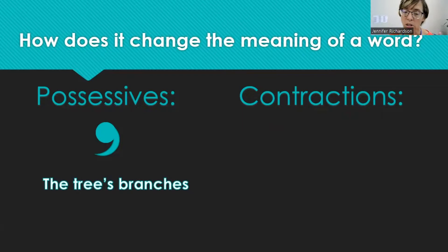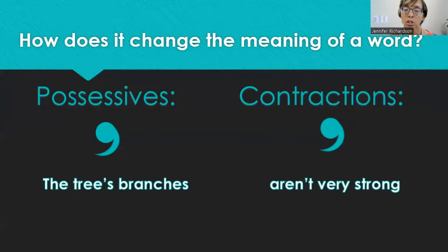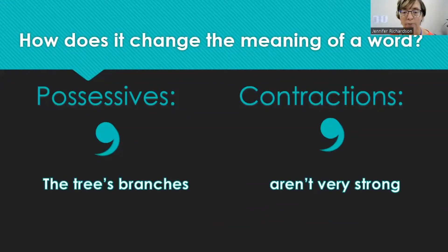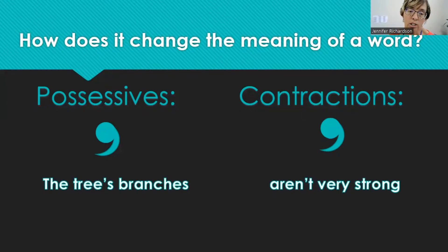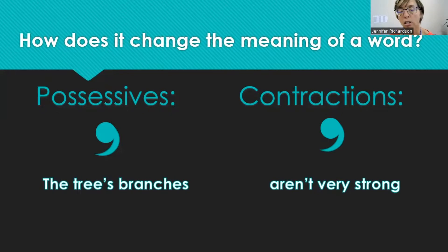We can also use the same little apostrophe for a contraction. Here's a contraction: aren't very strong. Aren't is a combination of the words are and not — it's kind of a shortcut. Aren't is a contraction. So the tree's branches is possessive, and aren't very strong is a contraction. This is two different ways you can see an apostrophe.